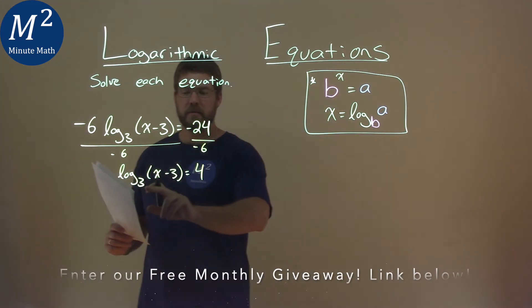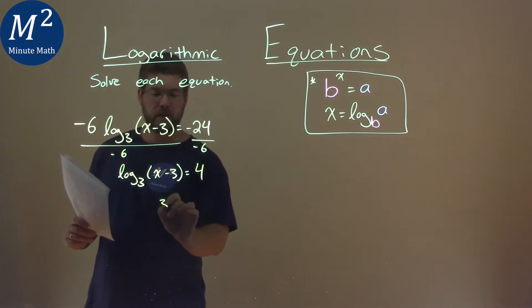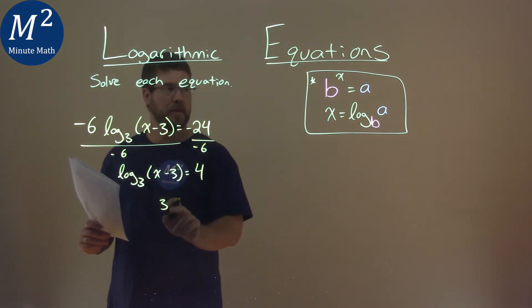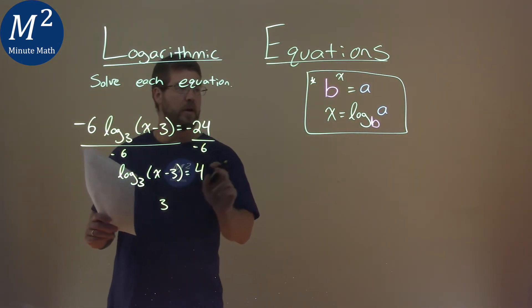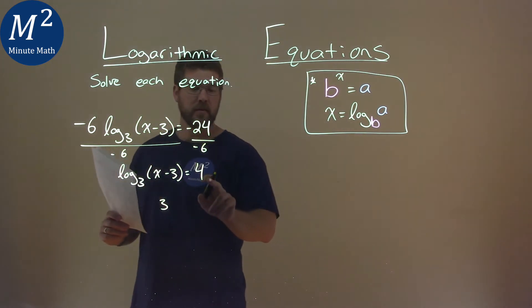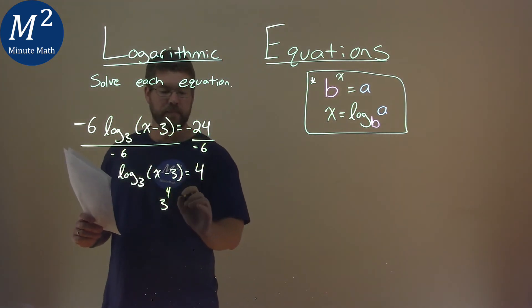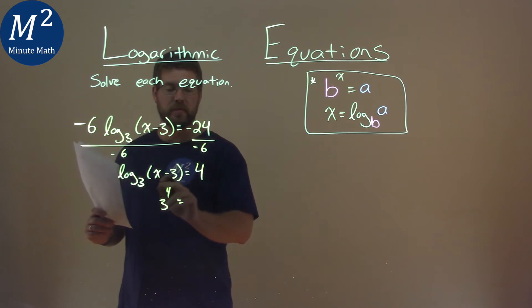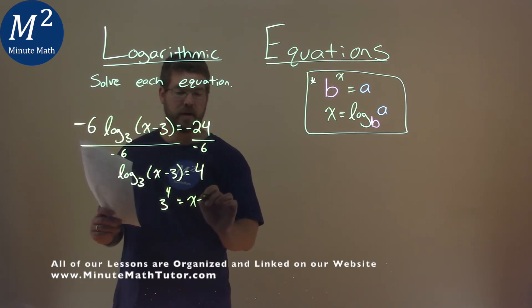So let's start with our base here being 3. So this converts to 3 to the exponent of what's on the outside, which is that 4, and that's going to be equal to what's inside the logarithm, which is x minus 3.